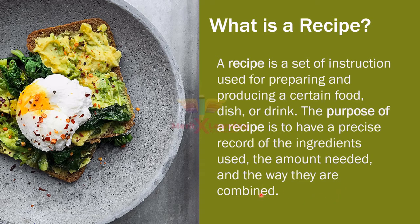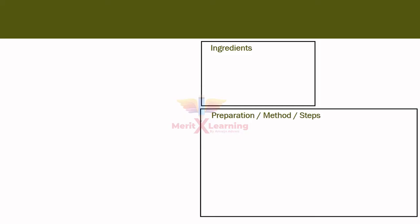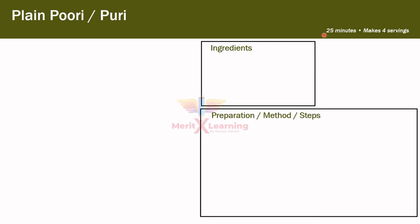Here I have given you one example of a simple recipe — this is the format, the way we write a recipe. First of all, on the top it is very important to write the name of the food dish. Here I have taken an example of plain Puri.